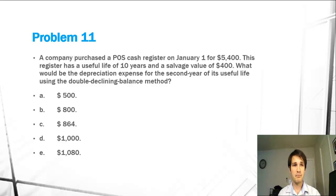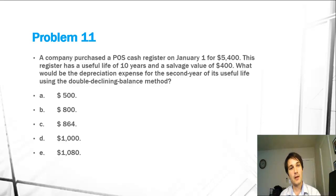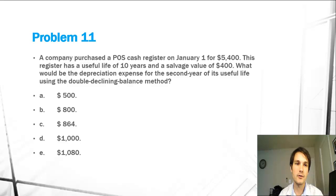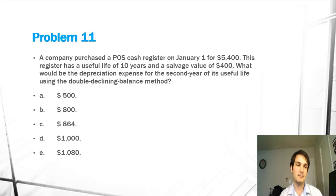Problem 11: a company purchased a POS cash register on January 1st for $5,400. This register has a useful life of 10 years and a salvage value of $400. What would be the depreciation expense for the second year of its useful life using the double declining balance method? And then it gives us a variety of answers.